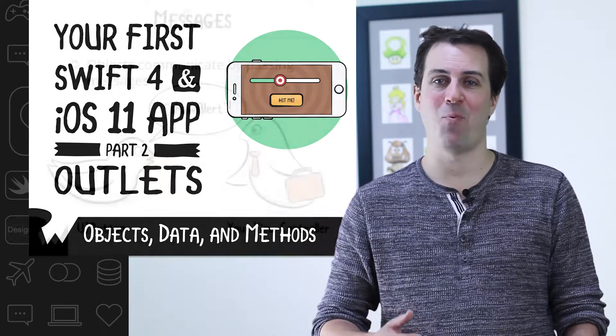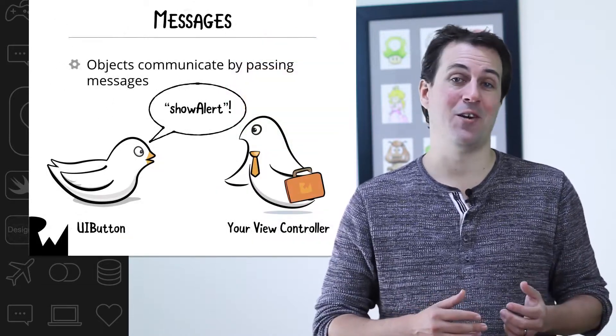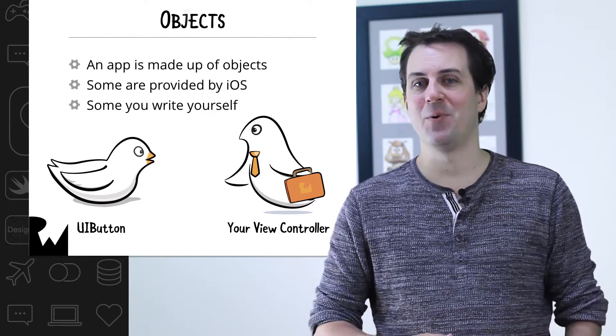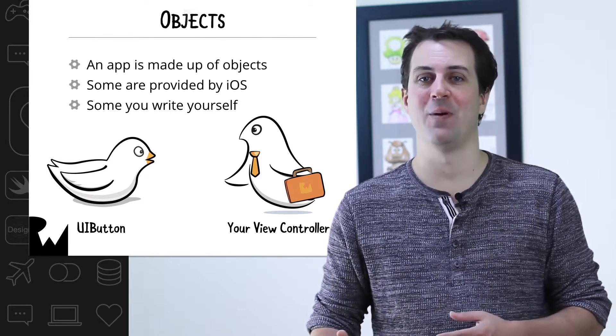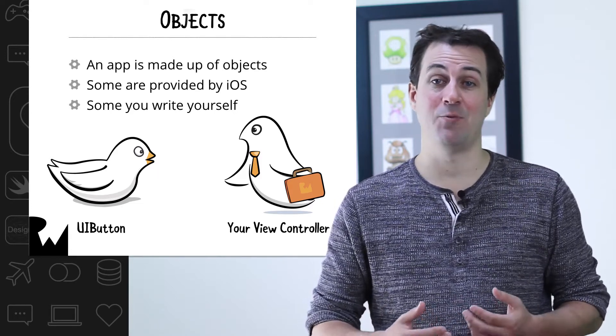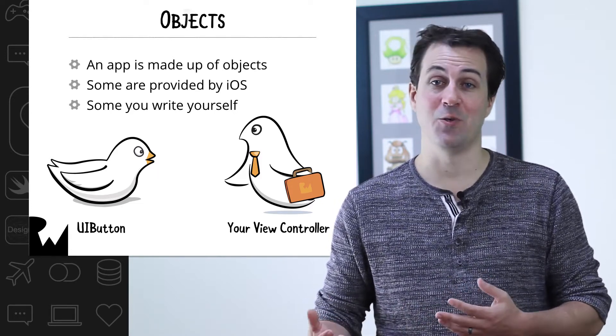Think back to the how does an app work section. Remember how I said an app is essentially made of objects that can pass messages to each other? To review, when you're writing an iOS app, sometimes you'll be using objects that are created for you by iOS, such as UIButton, and sometimes you'll be using objects that you create yourself, such as view controllers.